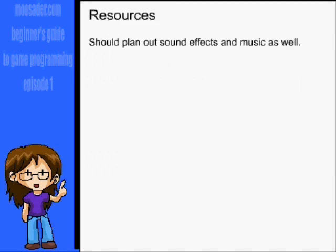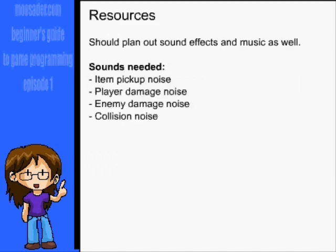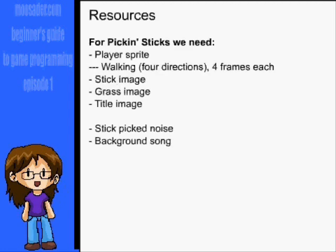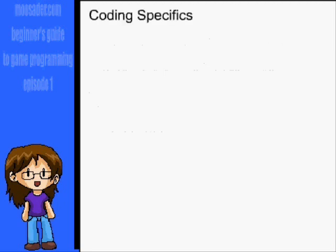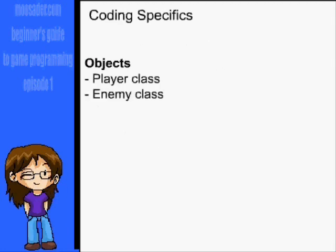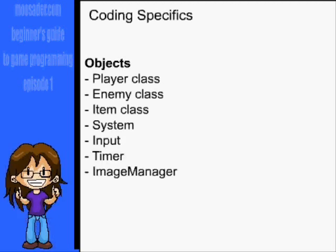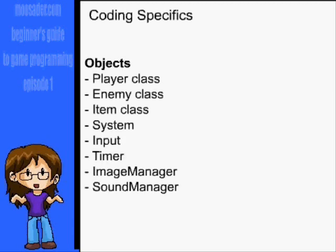This should be done with sound effects and music as well — item pickup noise, player damage noise, enemy damage noise, collision noise, etc. Of course, Pick and Sticks is pretty simplistic, so we'll only have a handful of each resource. After that, on to coding specifics. What kind of objects will there be in the game? Player class, enemy class, item class, system class, input class, timer class, image manager class, sound manager class, menu class — stuff like that.